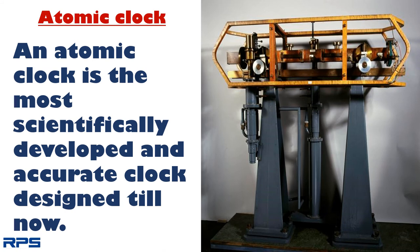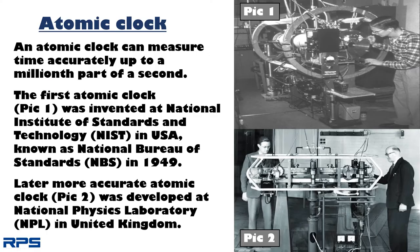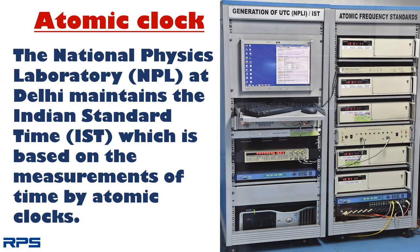The atomic clock is the most scientifically developed and accurate clock designed till now. An atomic clock can measure time accurately up to a millionth part of a second. The first atomic clock was invented at the National Institute of Standards and Technology in the USA in 1949. Later, a more accurate atomic clock was developed at the National Physics Laboratory in the United Kingdom. The National Physics Laboratory at Delhi maintains the Indian Standard Time, which is based on the measurements of time by atomic clocks.